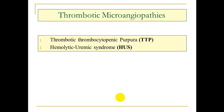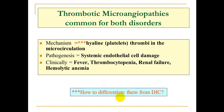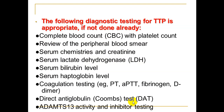TTP and HUS are very important topics because they cause high mortality. They are caused by hyaline platelet thrombi in the microcirculation. Pathogenesis involves systemic endothelial cell damage. Main presentations include fever, thrombocytopenia, renal impairment, hemolytic anemia with elevated bilirubin (indirect), elevated reticulocyte count, elevated LDH, and low haptoglobin. They can be differentiated from DIC by normal PT and PTT. ADAMTS13 activity and inhibitor testing is essential for pathogenesis.